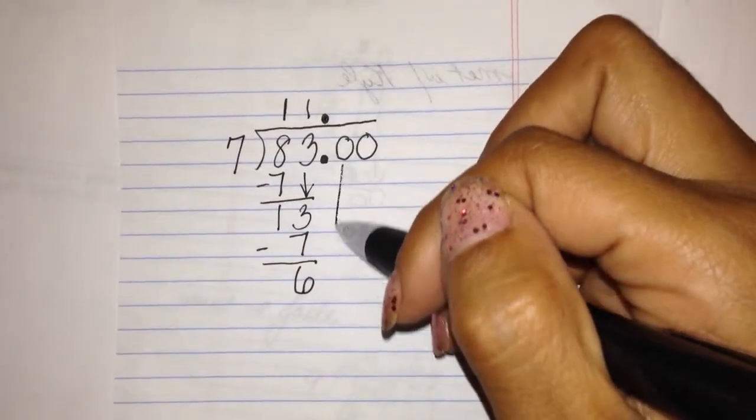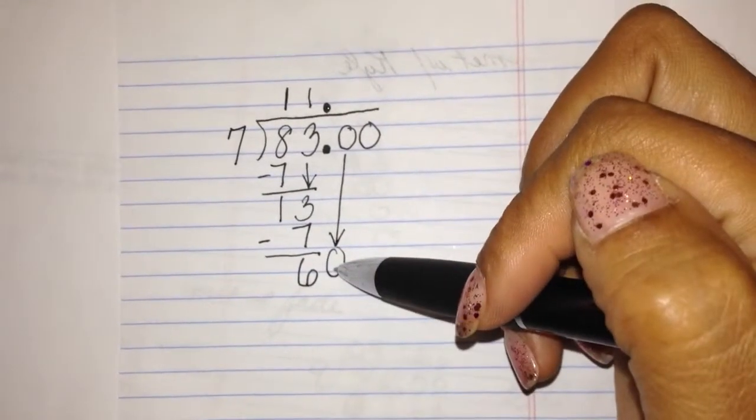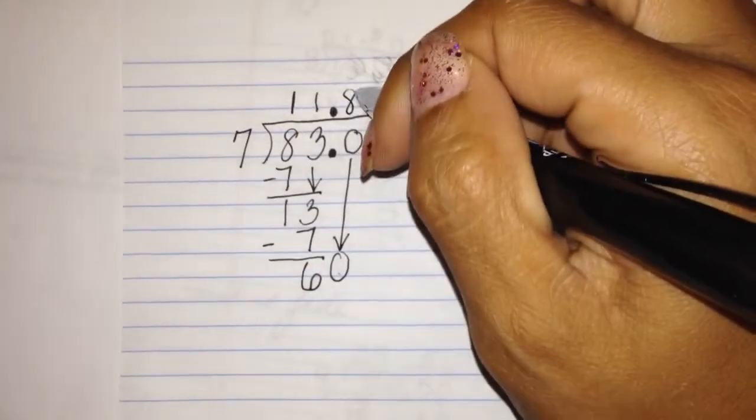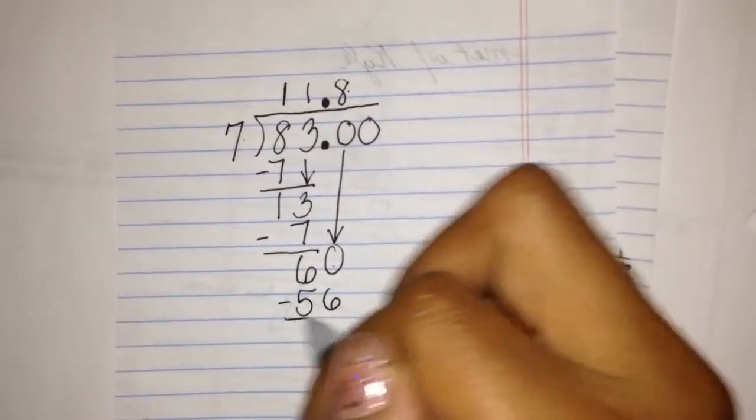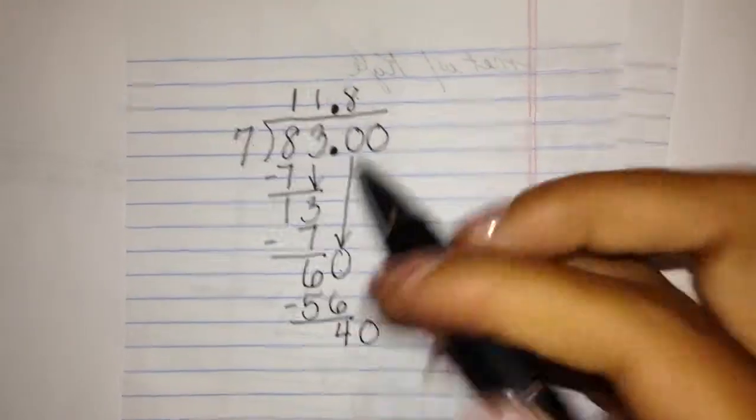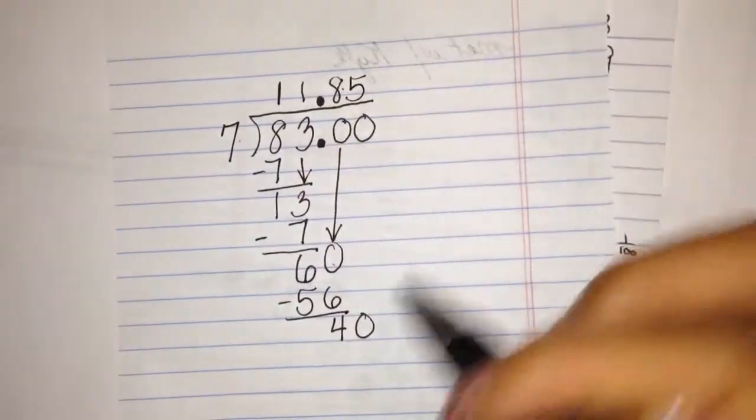Now I can just bring down the zero and keep dividing. 60 divided by 7 is 8. 8 times 7 is 56. 40 divided by 7 is 5. 5 times 7 is 35.